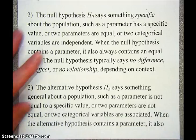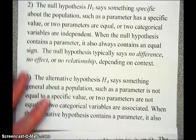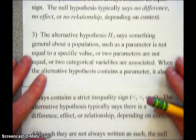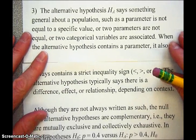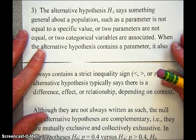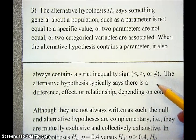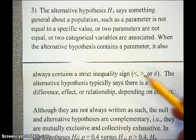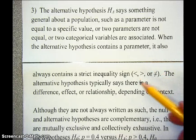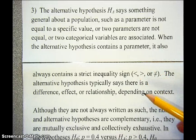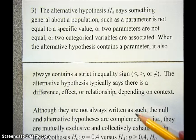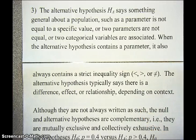When you write an alternative hypothesis, it always contains a strict inequality sign — a less than, or a greater than, or a not equal to. Whenever there's a parameter in your alternative hypothesis, you'll see one of these symbols. The alternative says, typically, there is a difference, there is an effect, there is a relationship, depending on the context.